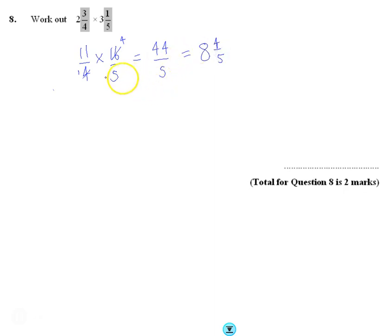Now you'd get this the same way if you've done just 11 times 16 and 4 times 5 and simplified at the end, but simplifying at the beginning allows you to make the numbers a little bit smaller and easier to deal with.